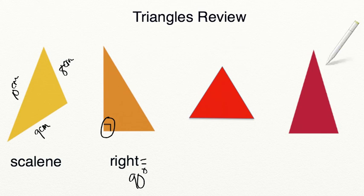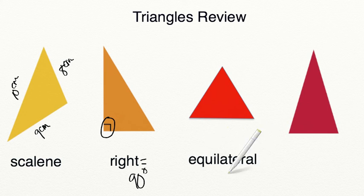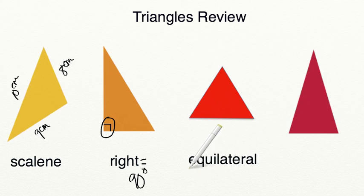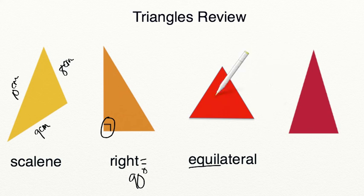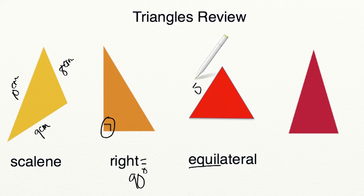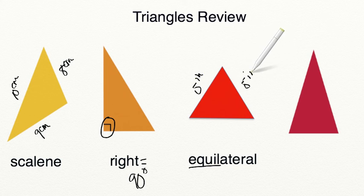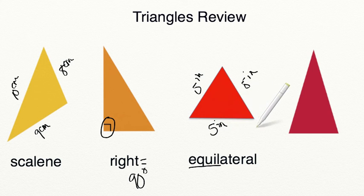Let's go ahead and look at our next triangle. Our next triangle is called an equilateral triangle. Equilateral sounds like equal, and that's because all sides have equal values and all angles have equal values. For example, this side length might be 5 inches, this side length would then also have to be 5 inches, and our third side length would also have to be 5 inches.